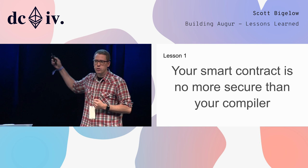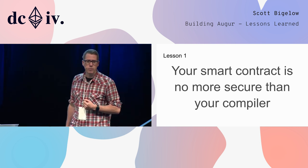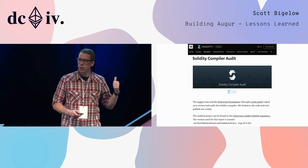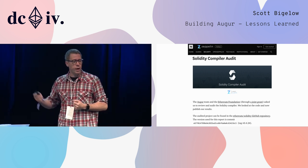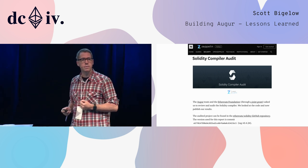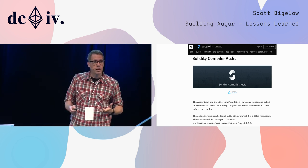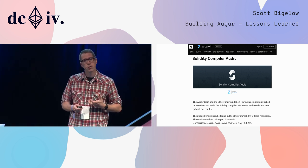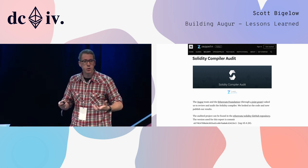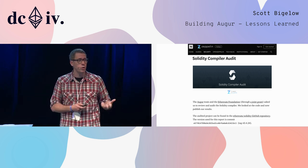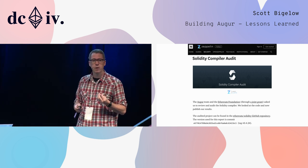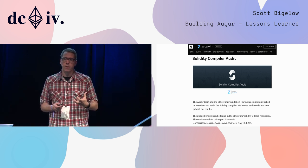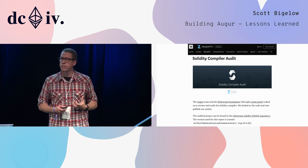Your smart contract is no more secure than your compiler. Which is why we were proud to release yesterday a joint effort between Augur and the Ethereum Foundation for a Solidity compiler audit. They found over 12 issues considered to be high or critical. Some have been addressed, some will be addressed, but luckily none of these created EVM code that left our contracts vulnerable. We feel a lot better about the platform we are leaving behind for other developers to build upon.